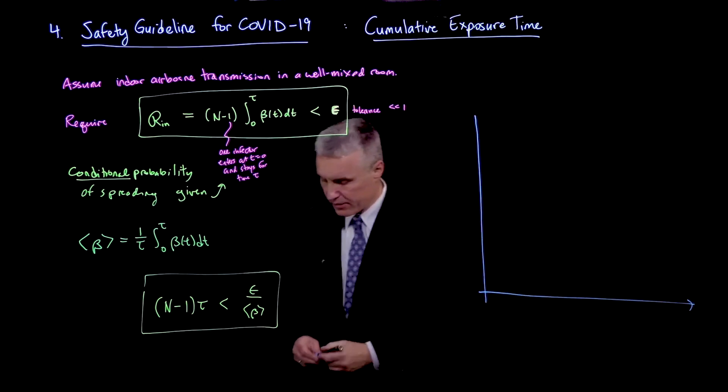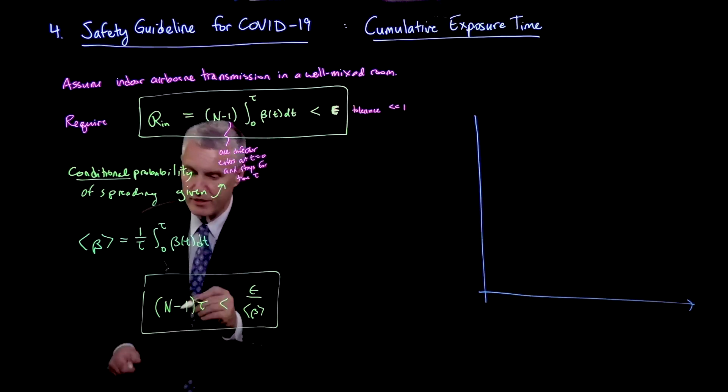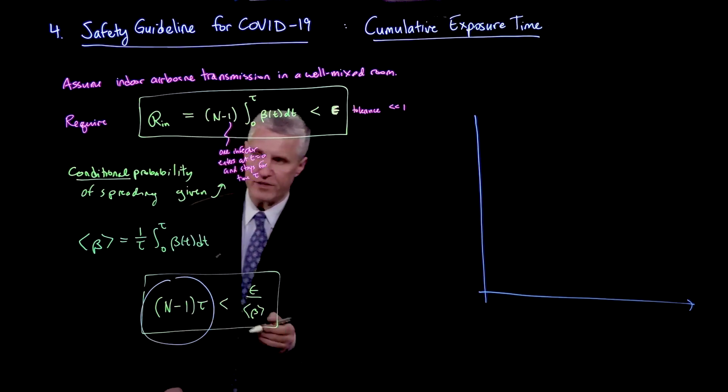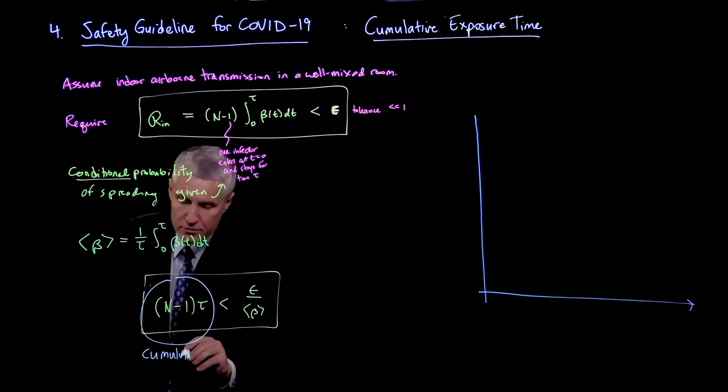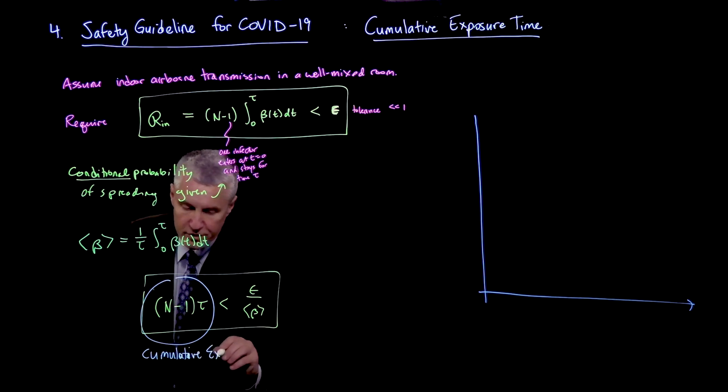So by the way, this quantity here, which is the product of n and t, or n minus 1 and t, is what I like to call the cumulative exposure time.